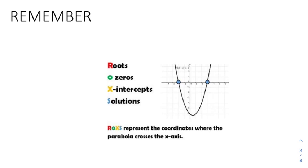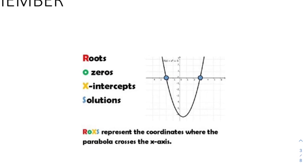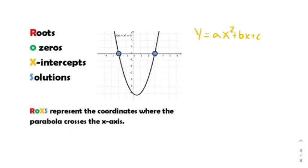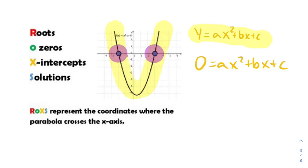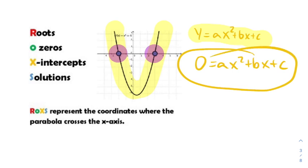Something I want to talk about right away is this idea about roots, zeros, x-intercepts, and solutions. When looking at the graph of a quadratic, the x-intercepts — where the graph intercepts with the x-axis — are also known as the roots or zeros of the equation. That means there are solutions to the equation 0 = ax² + bx + c. So by knowing the graph of a quadratic, you can use that to figure out the solutions to a related equation.